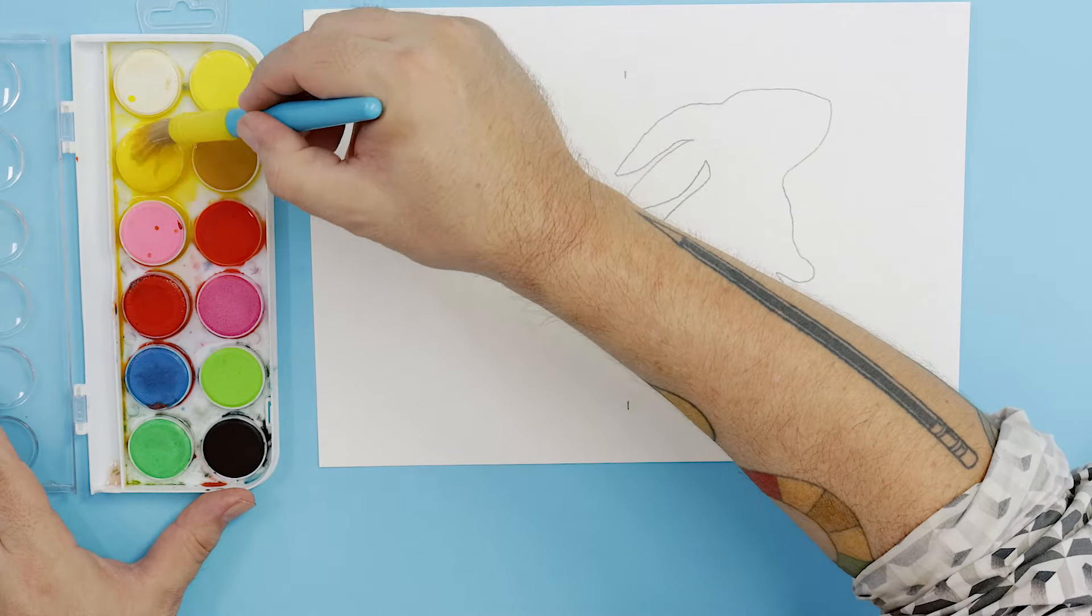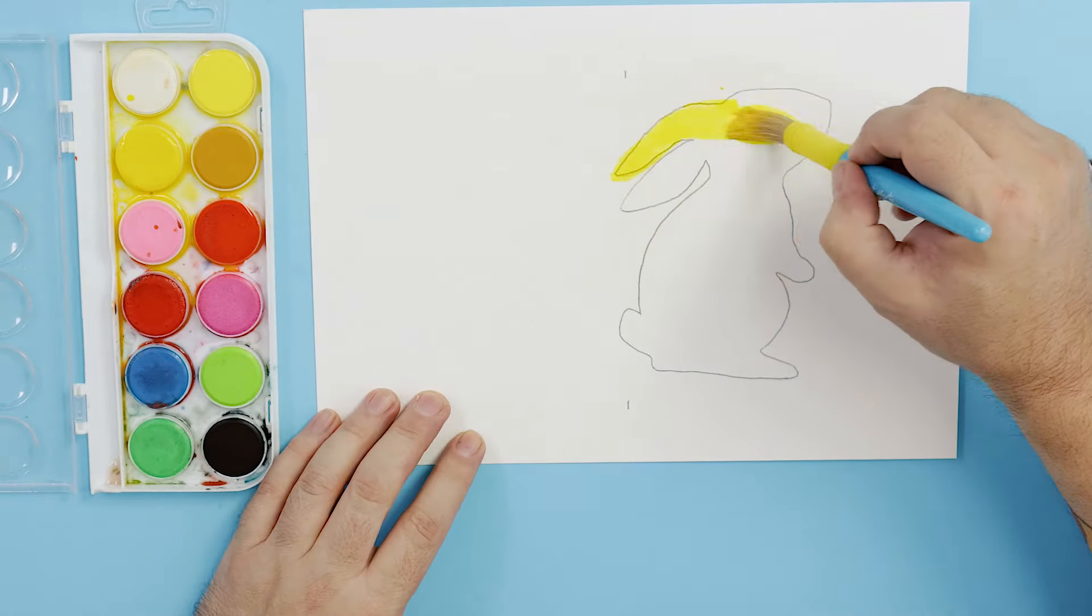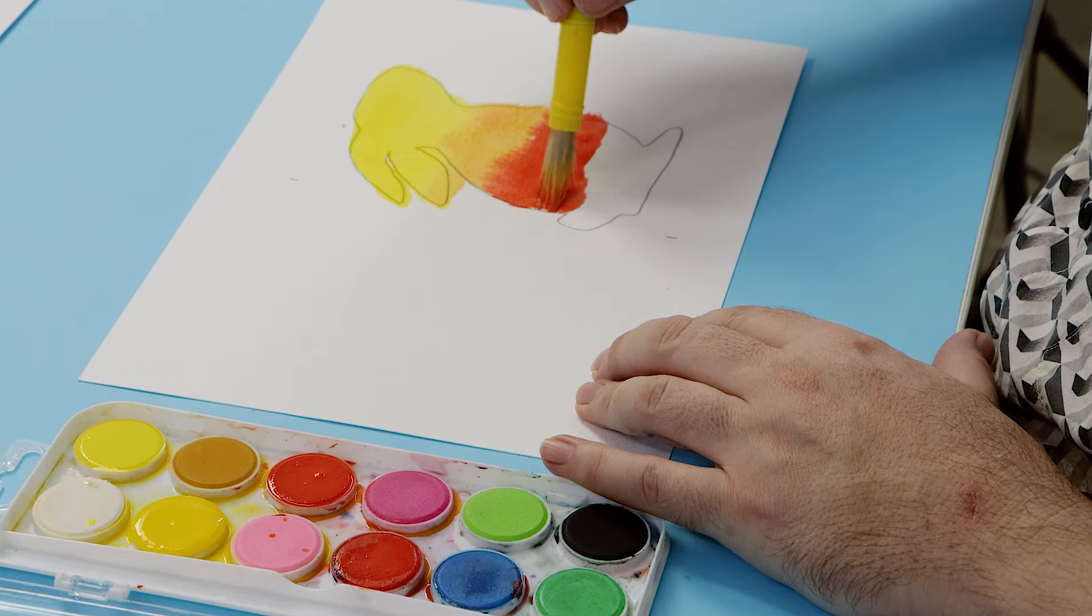This time we paint the card first using yellow moving to red at the bottom of the card and allow this to dry.